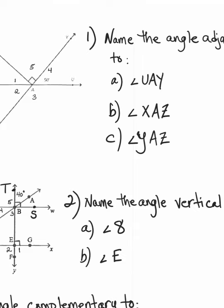We're going to do some practice on identifying angles based on their definitions. Let's take a look at number one. We're being asked to name an angle adjacent to the angles that are listed. So let's first identify what angle UAY is — that's angle number four, which is 50 degrees. We have to remember that adjacent angles are angles that are next to each other; they share a side and a vertex.